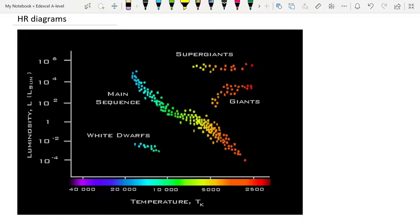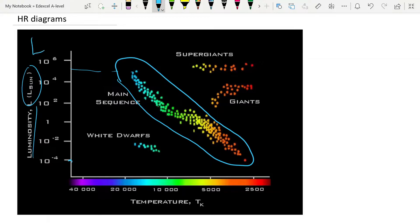What the HR diagram shows us is that most stars fall into this central category here, the main sequence. There is however a very large range along that main sequence, from about 10 to the 5 solar luminosities to about 10 to the minus 4 solar luminosities. And so you can see that the luminosity is given in multiples of the sun's luminosity, and sometimes you see this written as L with a circle and a dot. You should also notice this is a logarithmic scale, and these are something that you have to be familiar with.